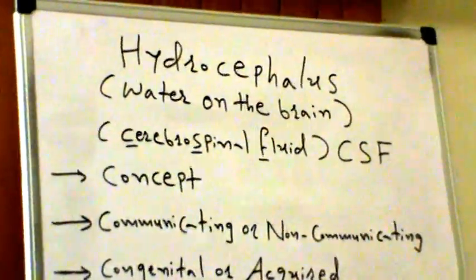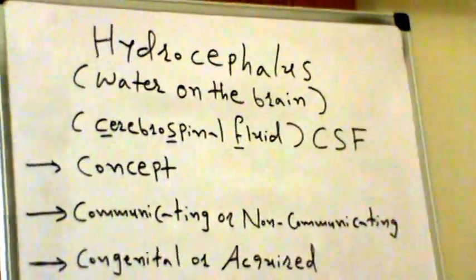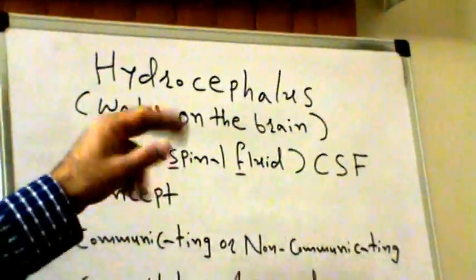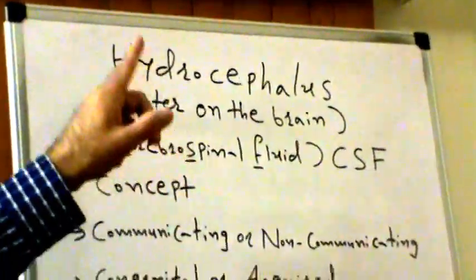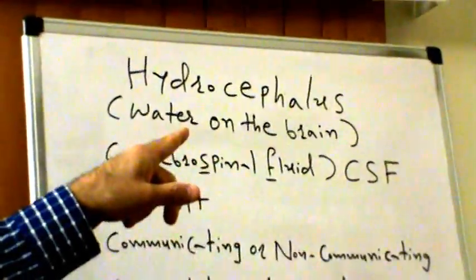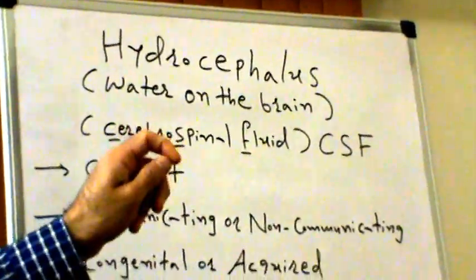So hydrocephalus, water on the brain, is commonly referred to as water on the brain because the cerebrospinal fluid looks like water, a clear liquid. Hence the name is water on the brain.